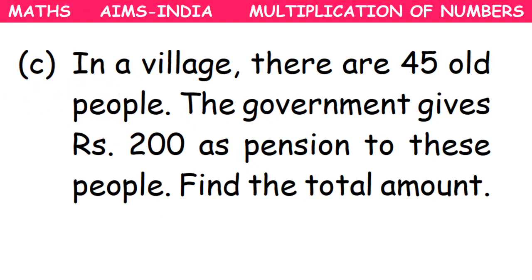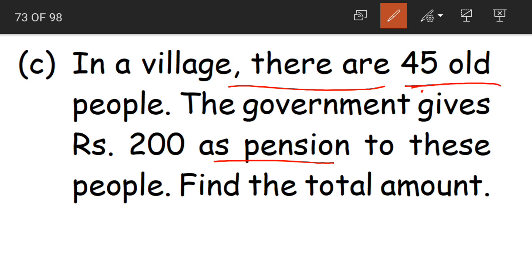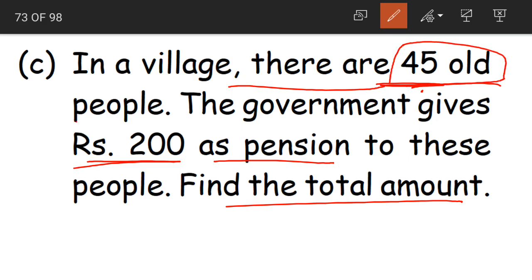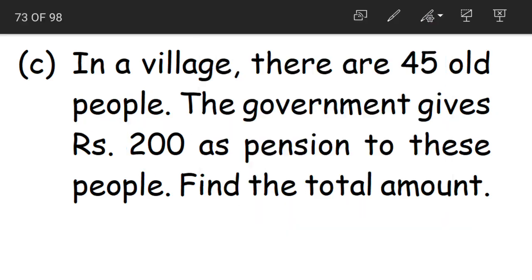Last homework question: In a village there are 45 old people. The government gives 200 rupees as pension. Find the total amount. Number of old people is 45. Pension received by one old person is 200 rupees. The total pension received by 45 old people is equal to 45 into 200 — the number of people multiplied by the rupees received by each person.